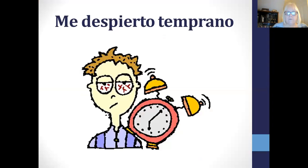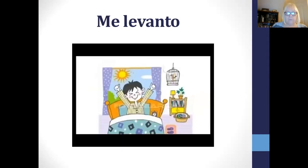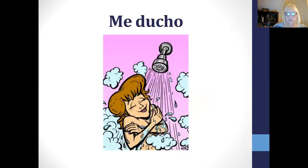Me despierto temprano comes from the verb despertarse, and it means to wake up. So I wake up early — me despierto temprano. Me levanto is I get up — think about levitating to help you remember this. Me levanto from the verb levantarse. Number three is me ducho, from the verb ducharse, to have a shower.